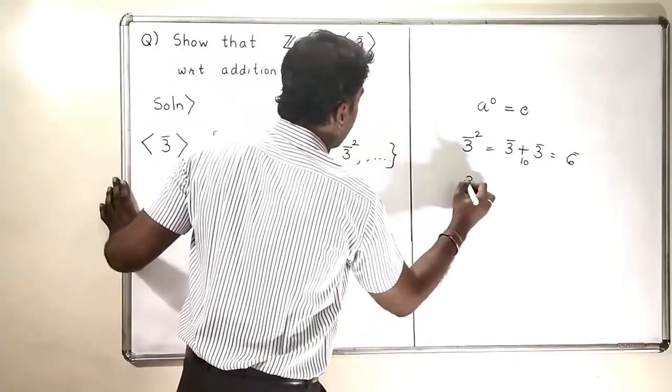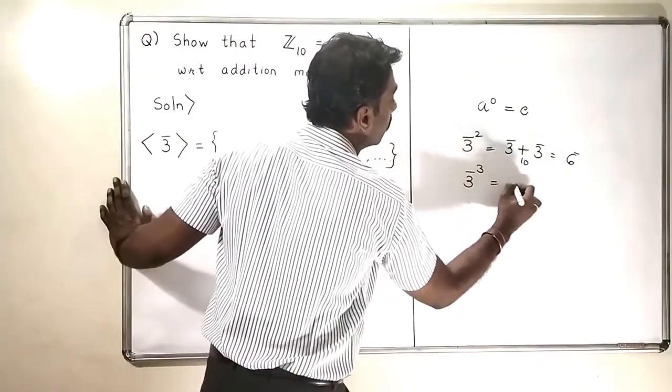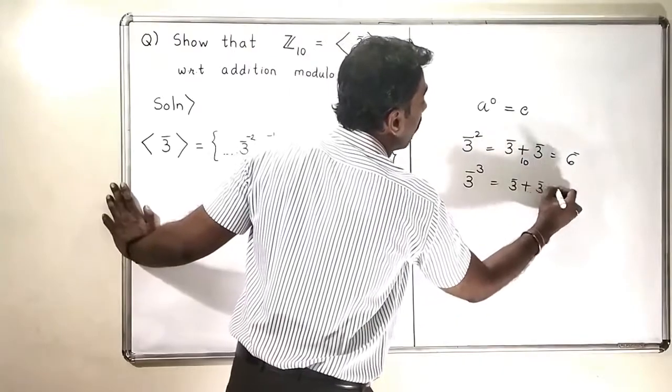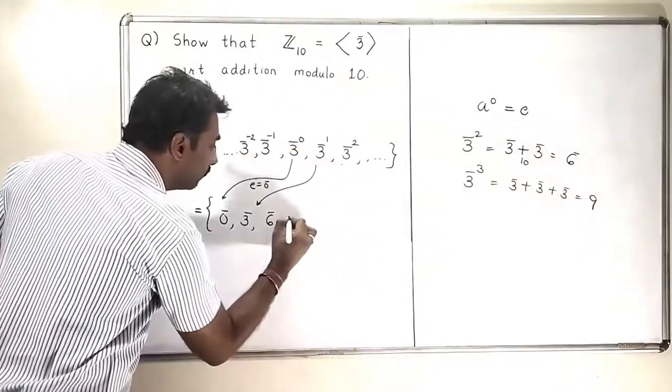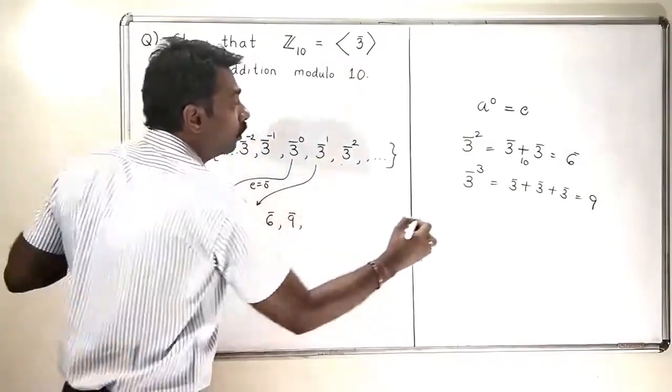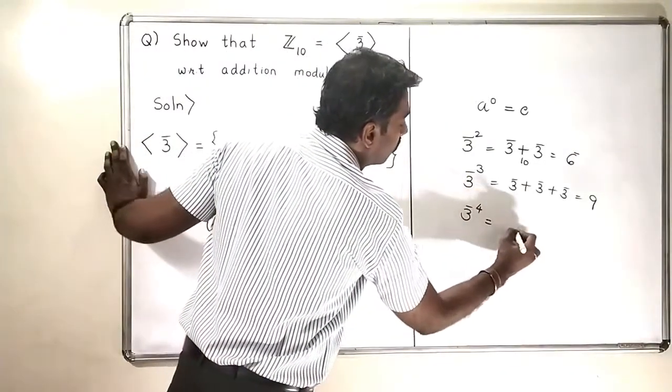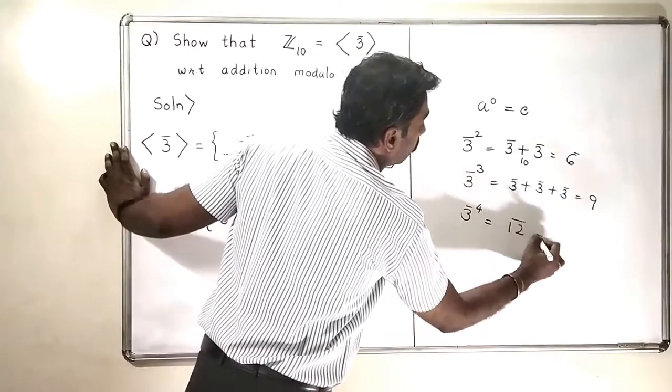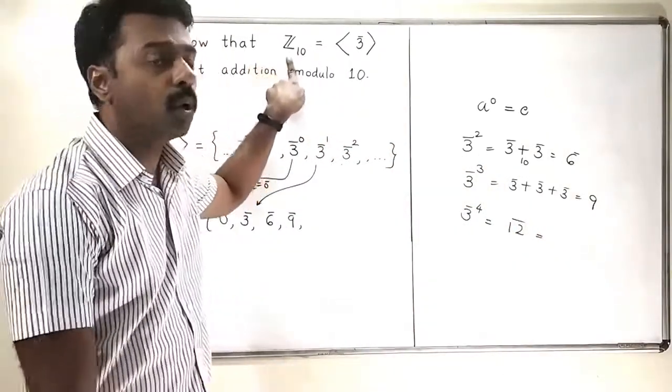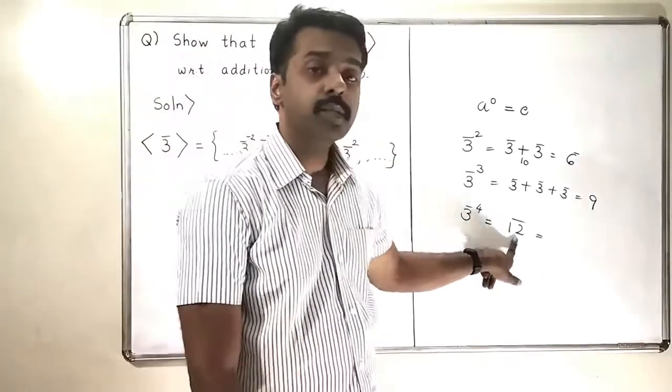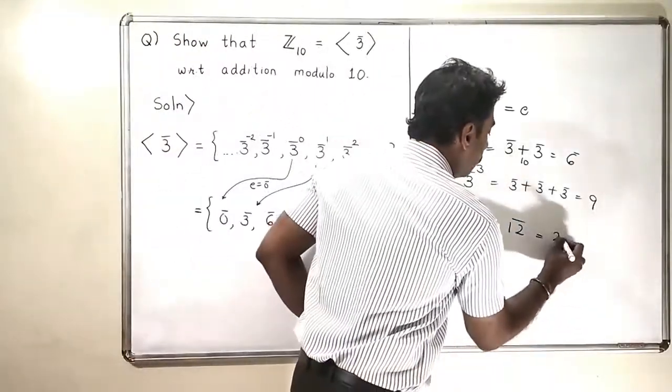Then 3 bar cube, 3 bar raised to 3, it is 3 bar plus 3 bar plus 3 bar which will be 9 bar. So 3 bar raised to 4 bar in a similar fashion will become 12 bar, and 12 bar modulo 10—in modulo 10, 10 becomes 0—so 12 bar becomes 2 bar.